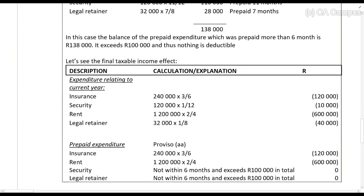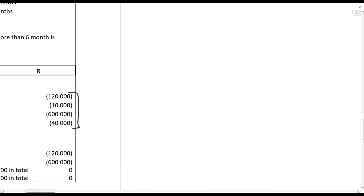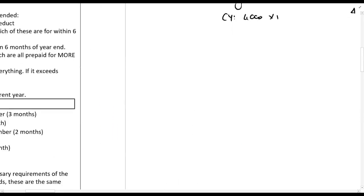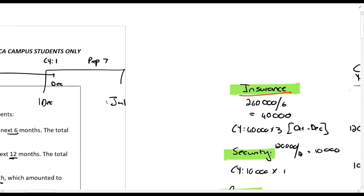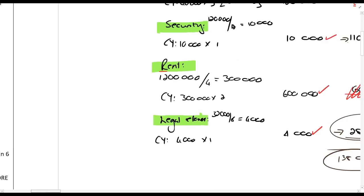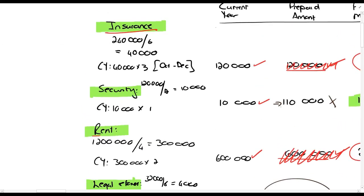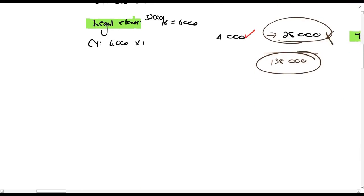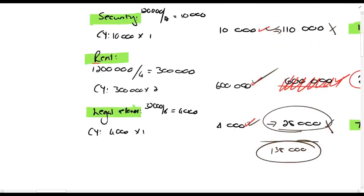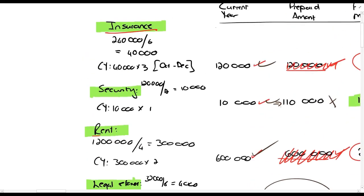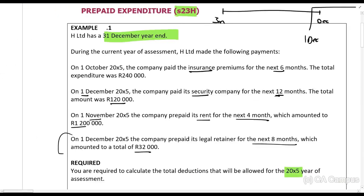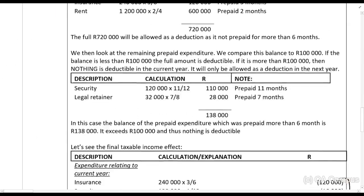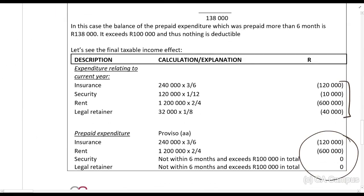So the current year amounts are: R120,000 (insurance), R10,000 (security), R600,000 (rent), and R4,000 (legal retainer). In addition, we are allowed to deduct R120,000 and R600,000 as prepaid expenses because those fall within the six-months-or-less rule.